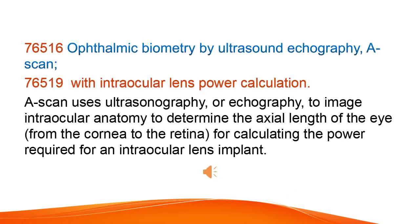Ophthalmic biometry by ultrasound echography, A-scan with intraocular lens power calculation. A-scan uses ultrasonography, or echography, to image intraocular anatomy to determine the axial length of the eye from the cornea to the retina, for calculating the power required for an intraocular lens implant.